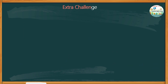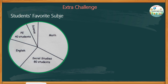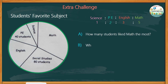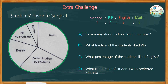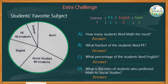Are you ready for an extra challenge? Study the pie graph about the students' favorite subject. The ratio of the students that favored science to PE to English to mathematics is 1 to 2 to 3 to 5. To help us answer each question, it is best to find out the number of students who preferred each subject. The pie graph shows the number of students for each subject, as well as the total number of students in this surveyed group.